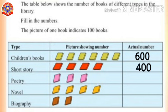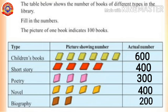Next, poetry: 3 books of poetry indicates 300 books. Next, novel: 4 books of novel indicates 400 books. At last, biography: 2 books of biography indicates 200 books.